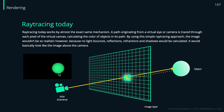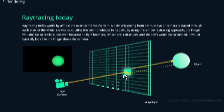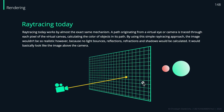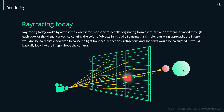We shoot as many rays through our image grid as we have pixels, and then we get the final rendering result. Improving the algorithm slightly, we can also check if one object is in front of another — for instance, a red sphere in front of a green sphere. By doing this for every pixel, we get the final image.